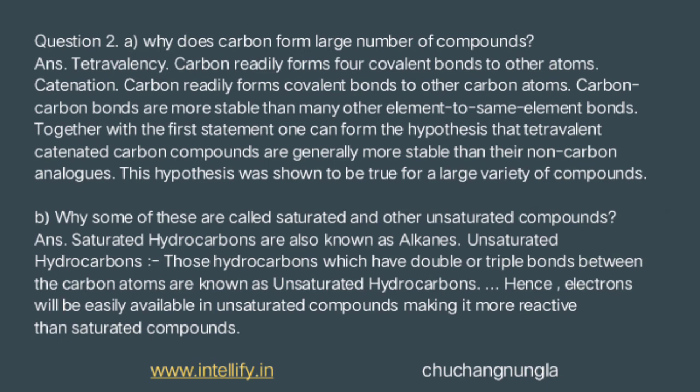Elements such as oxygen, nitrogen, hydrogen, sulfur, and chlorine give rise to compounds with specific properties, which depend on the element other than carbon present in the molecule. Some compounds are called saturated because they contain single bonds only between two carbon atoms, but some are unsaturated because in these hydrocarbons, the valency of carbon is satisfied by double or triple bonds.